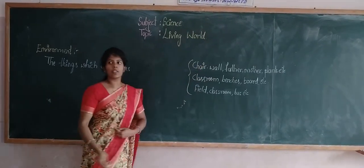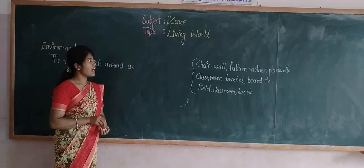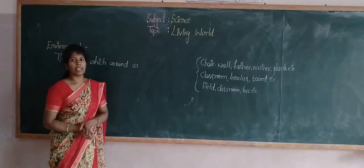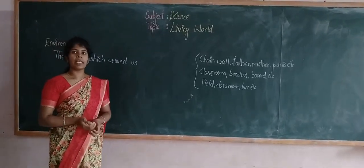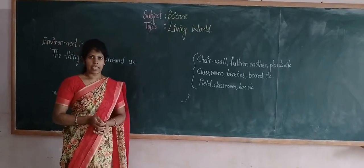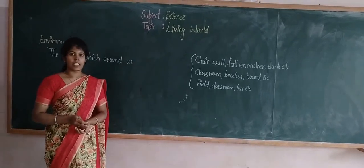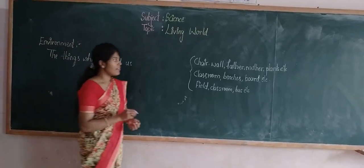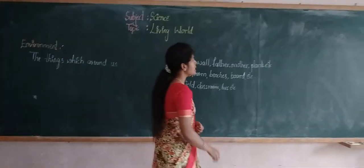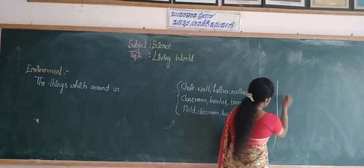In this chapter, Living World, we are going to learn about the meaning of environment, living and non-living things, and what are the characteristics of living things. First, we will see the meaning of environment.